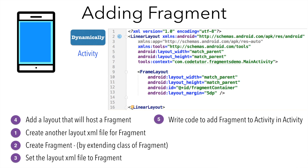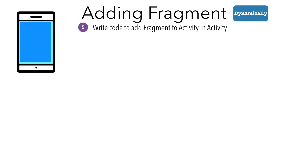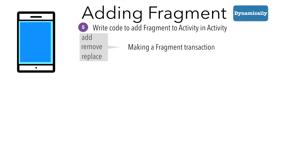The next step is writing the code to add the fragment to the activity. The fifth step of writing the code to add a fragment to an activity is actually a multi-step process. The major operations associated with the fragment are: you can add a fragment, you can remove a fragment, or even replace a fragment, which is basically remove and add. All these three operations are called a fragment transaction — that is the standard terminology in Android. Android provides an API called Fragment Transaction, with methods like add, remove, and replace.